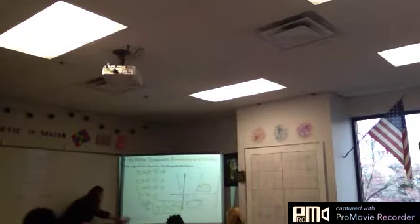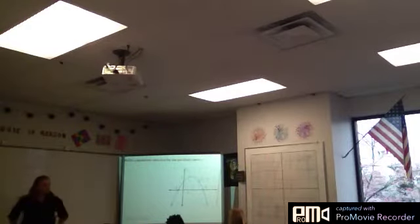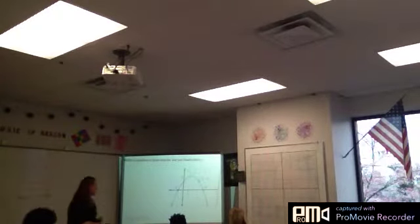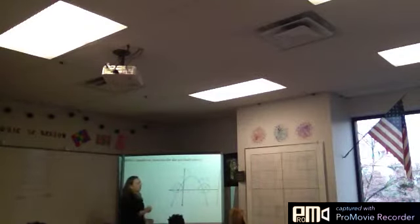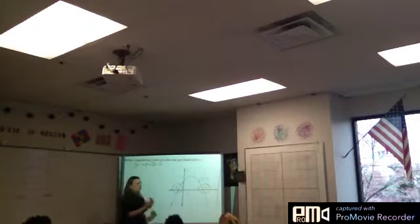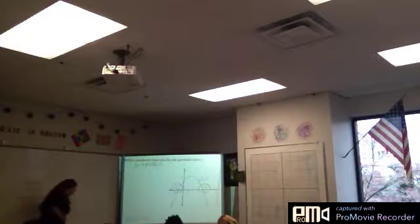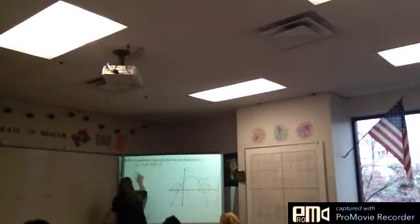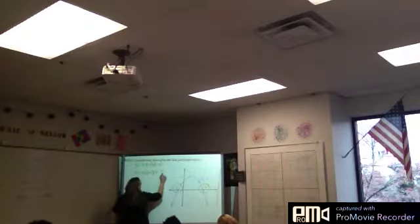Now let's look at the next one. Tell me what form should I put this in? There are three forms: standard, vertex, and intercept. Intercept — because I have two intercepts right here. Intercept form looks like Y equals A times (X minus P)(X minus Q). So from the graph, does it matter which intercept I put in first — negative one or four? No. So I'm going to say Y equals A times (X plus 1)(X minus 4), because remember it's the opposite sign.